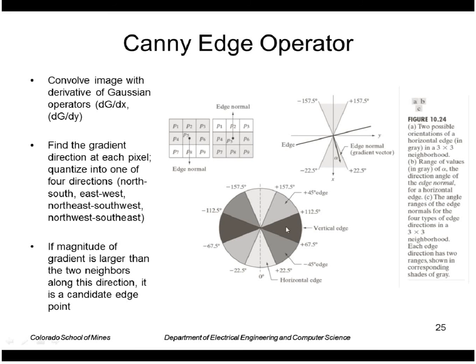To do this digitally, we convolve the image with the two operators, find the gradient direction using the arctangent and quantize it into one of four directions. Then we examine the two neighbors on either side of each point: if the current point has a larger magnitude than its neighbors, it's a candidate edge point, and we threshold based on that magnitude to signal an edge point or not.